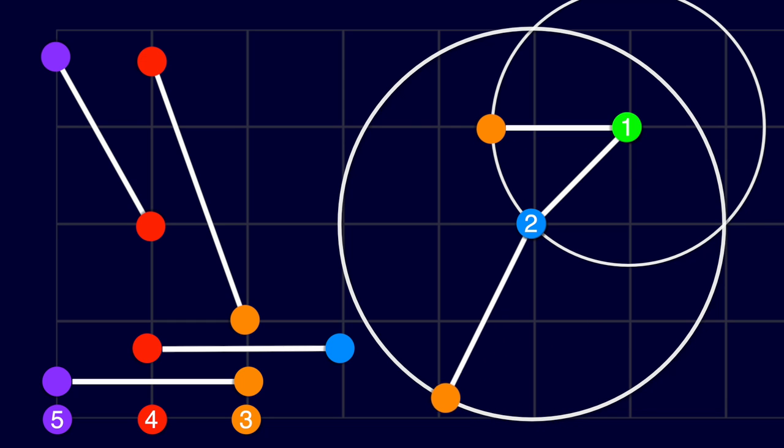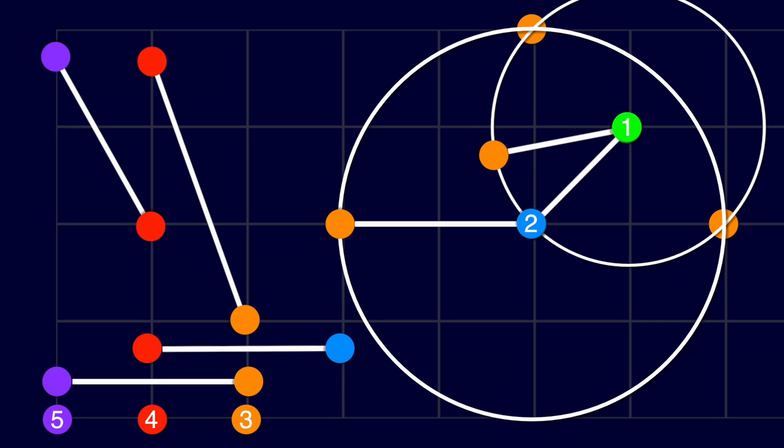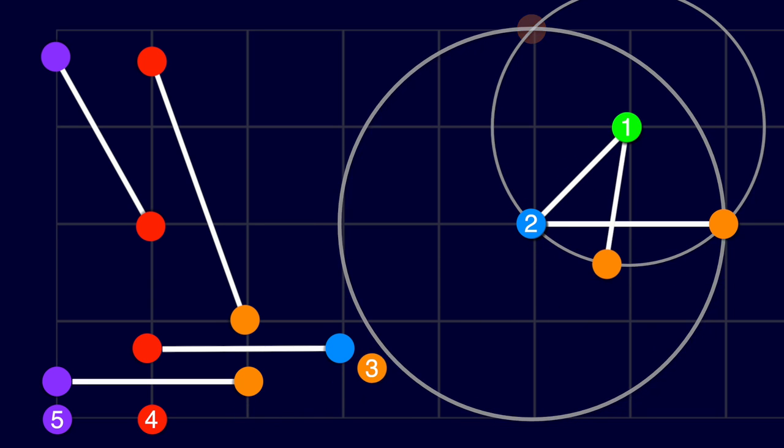We see that the circles intersect in two points. When we use either of these two points for orange, we know that both sticks are respected, because we used their length to define the circles. Choosing the intersection on the right will get us one step closer to our house.